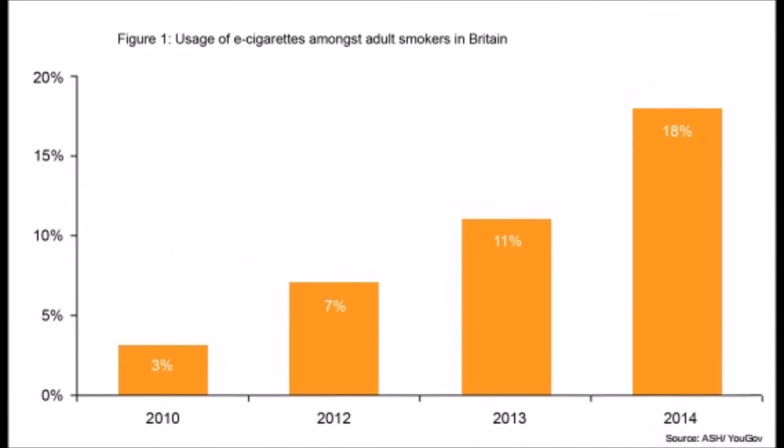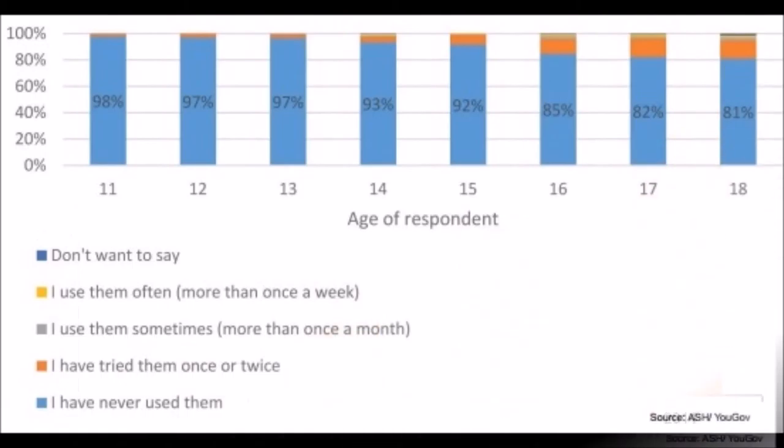One survey has shown that in 2010, 3% of smokers said they used electronic cigarettes. This figure increased to 18% in 2014. One of the worries surrounding electronic cigarettes is that they could act as a gateway to smoking amongst children. Current evidence shows that this is not happening. Amongst children, electronic cigarette use is confined almost entirely to those who have already tried smoking.